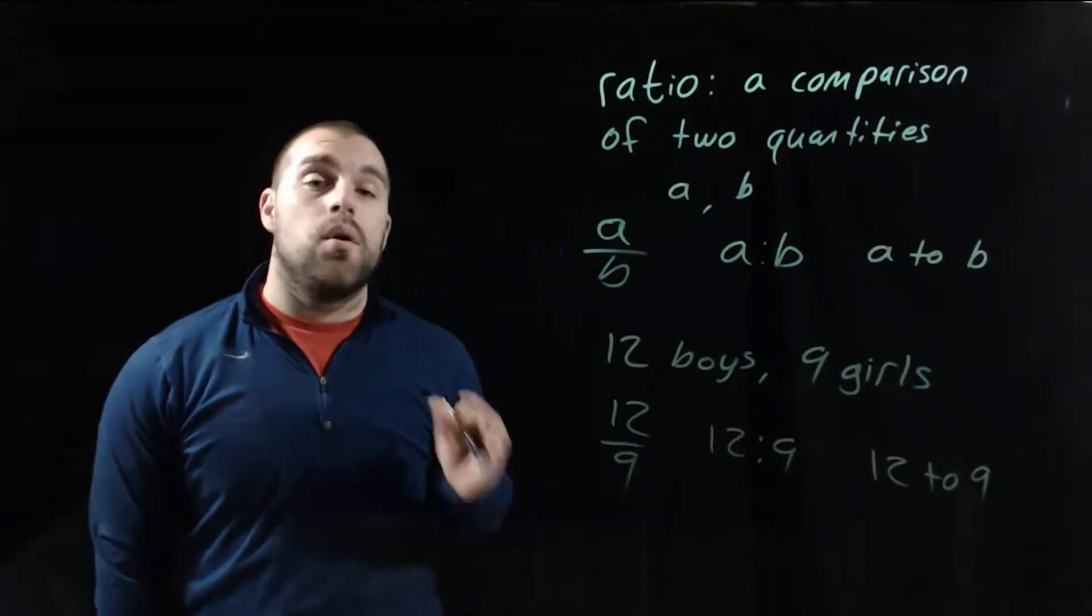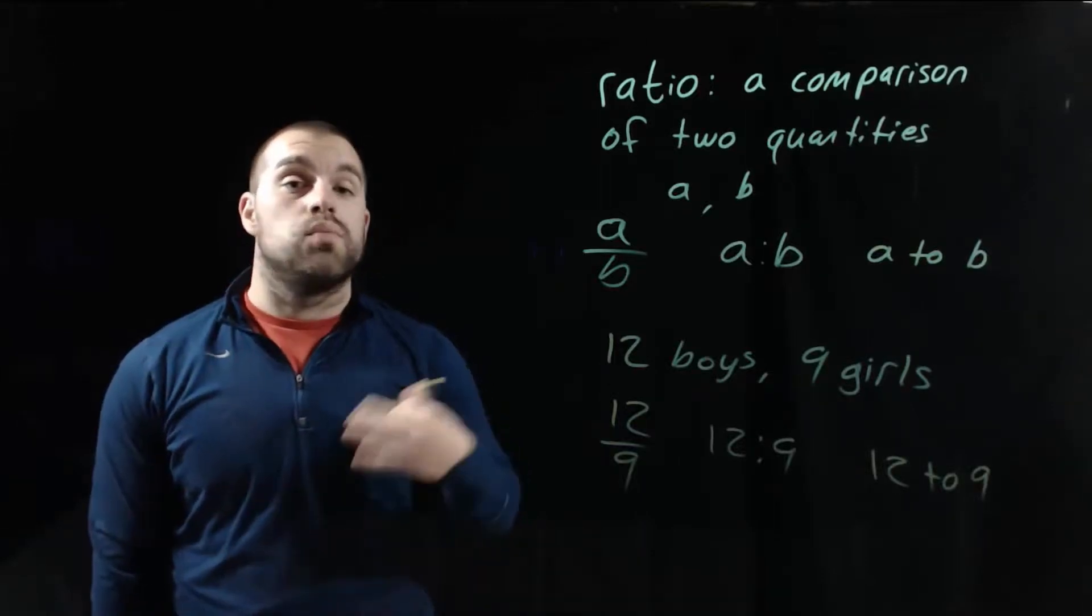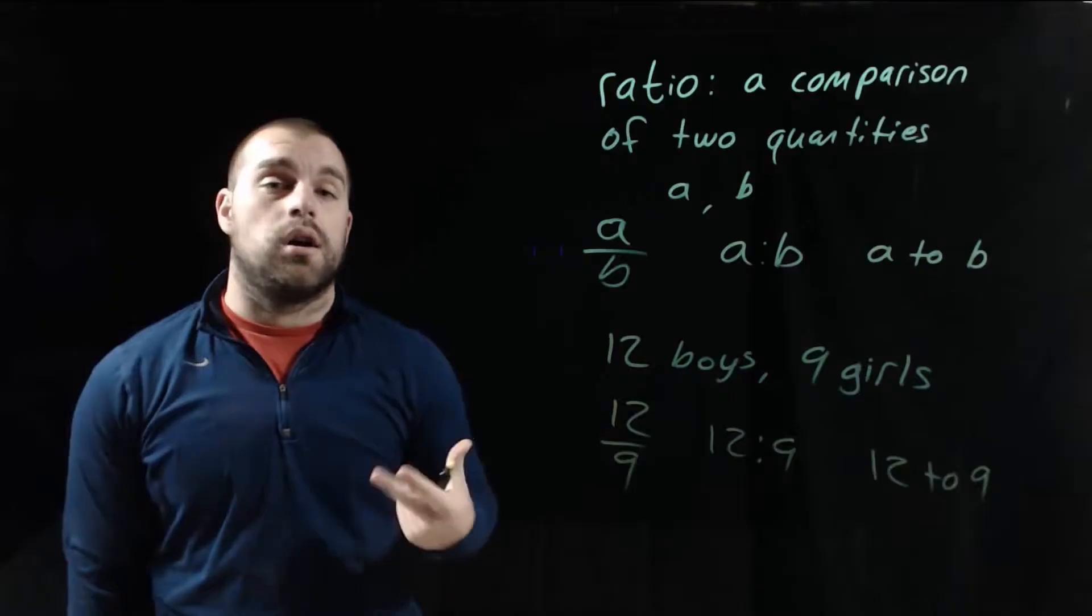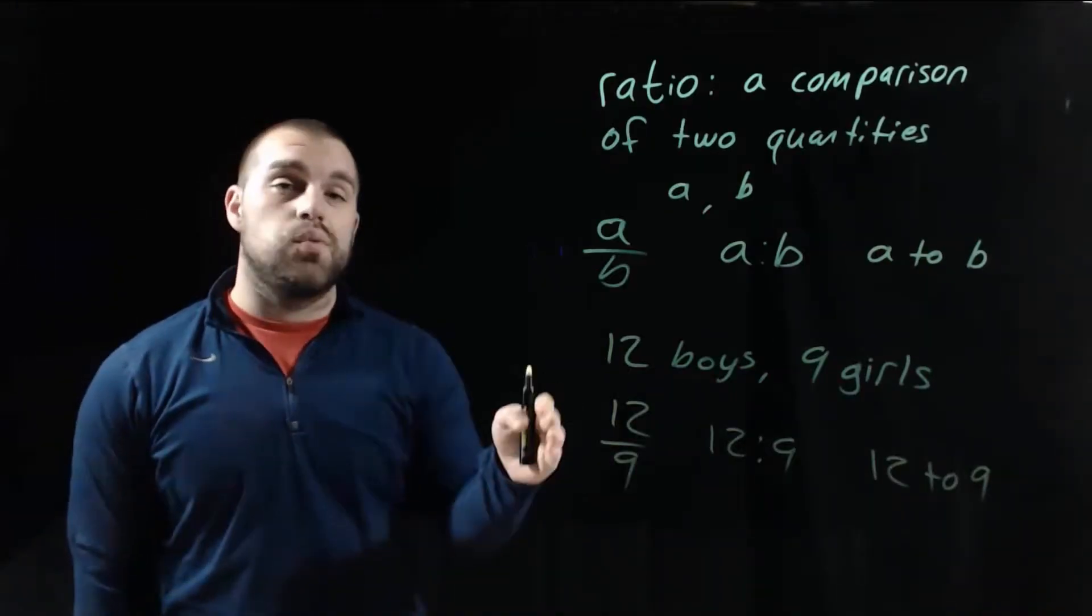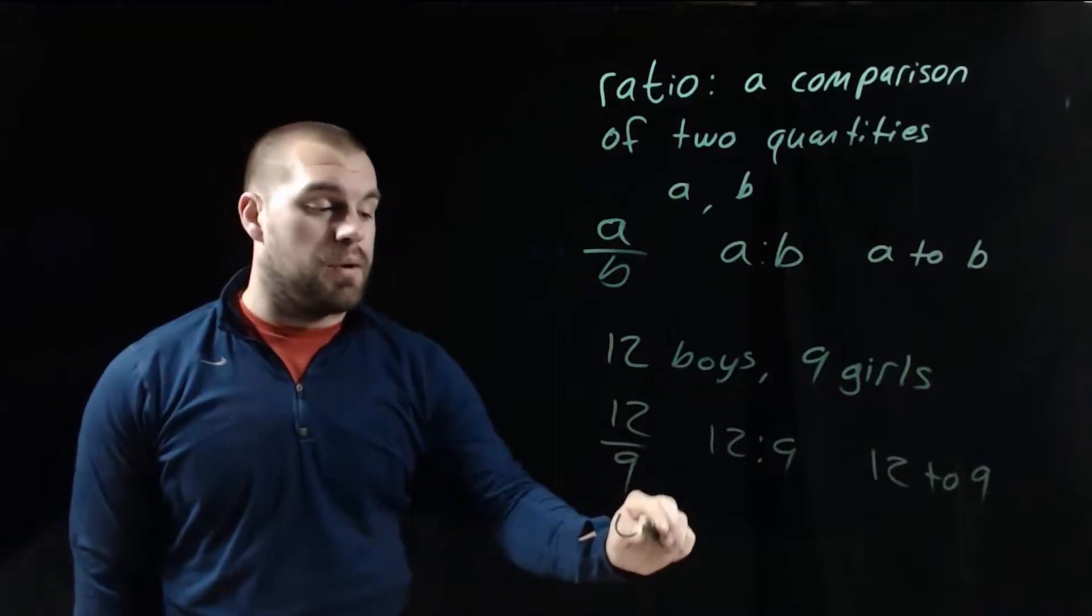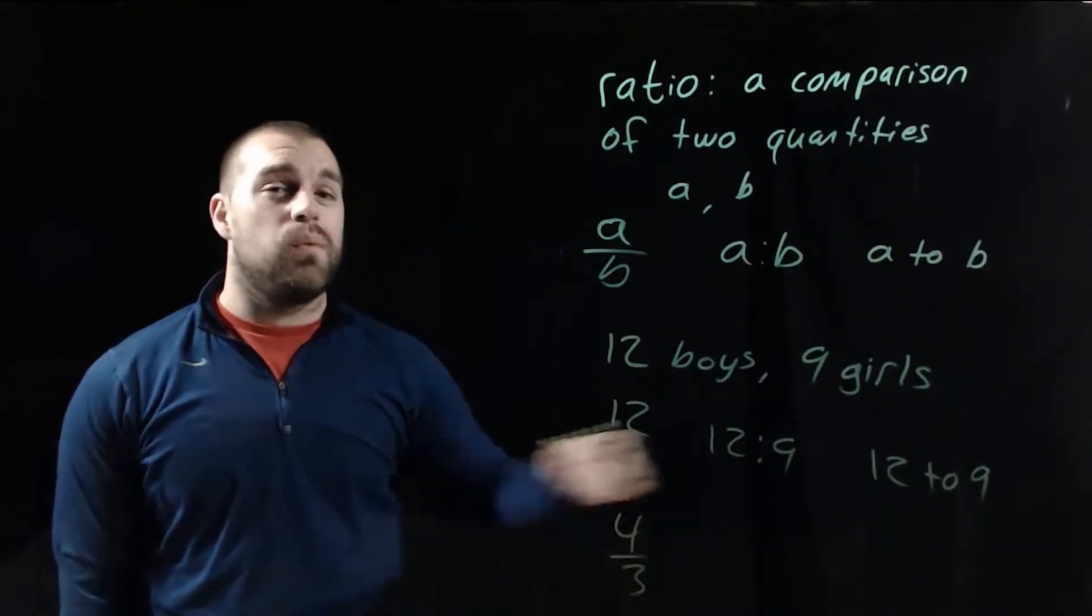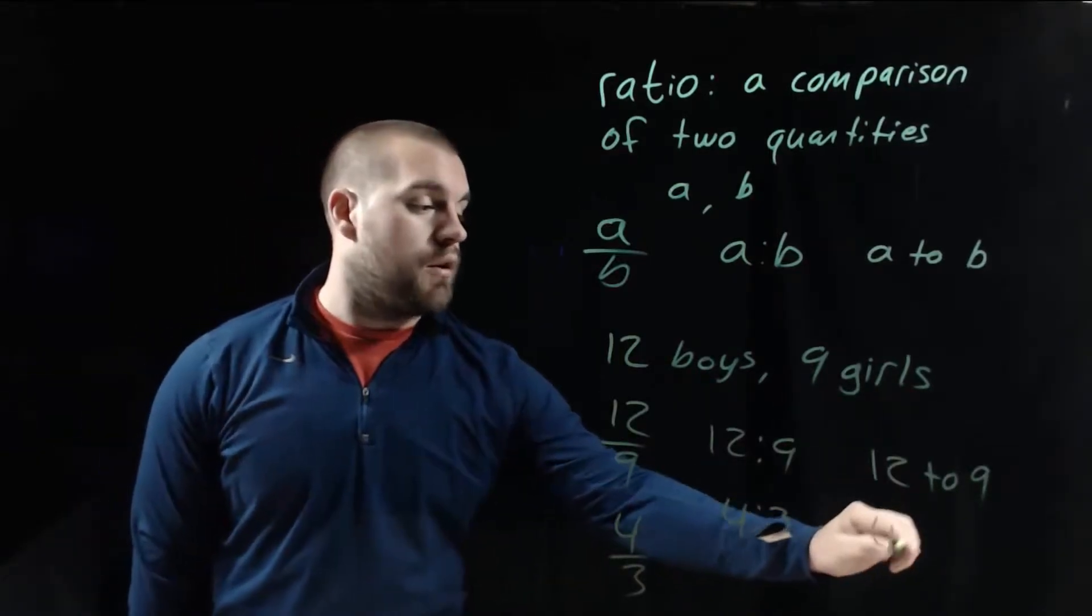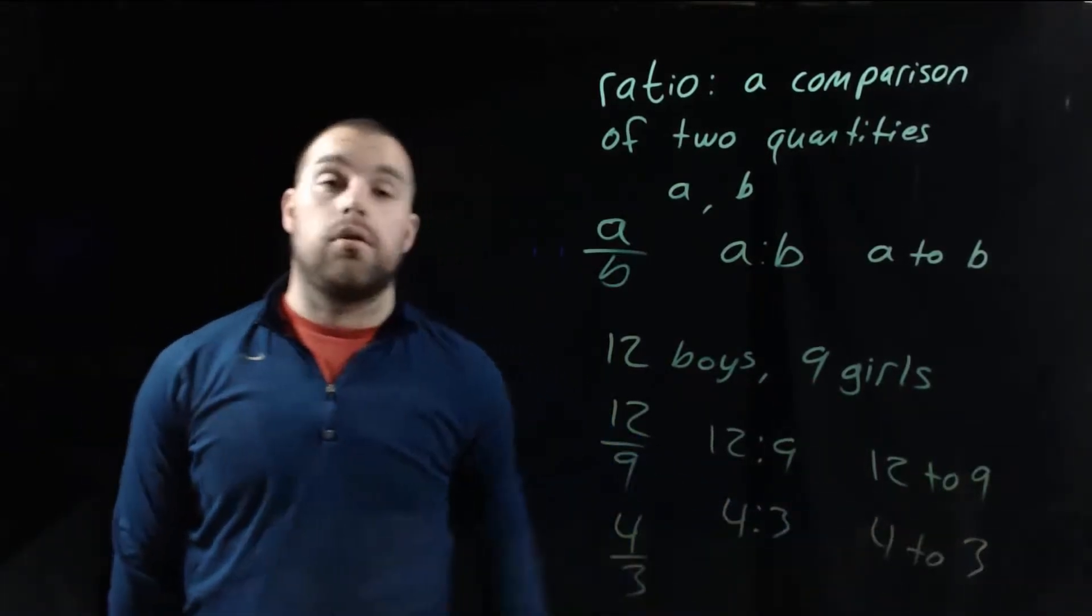Now, no matter which way we set this up, one thing we always want to do is reduce these down. It's easiest to see that when we're dealing with the fraction. Each one of these numbers is divisible by 3. So if we reduce this fraction down, it would be 4 over 3. And we'd want to do the same thing with these other ones too. This would reduce down to 4 colon 3, and this would reduce down to 4 to 3.